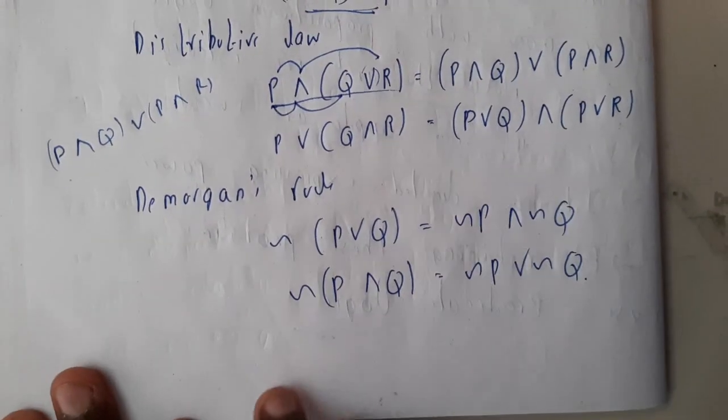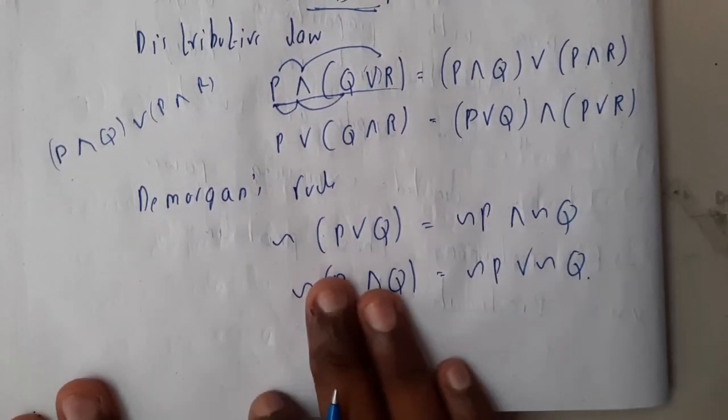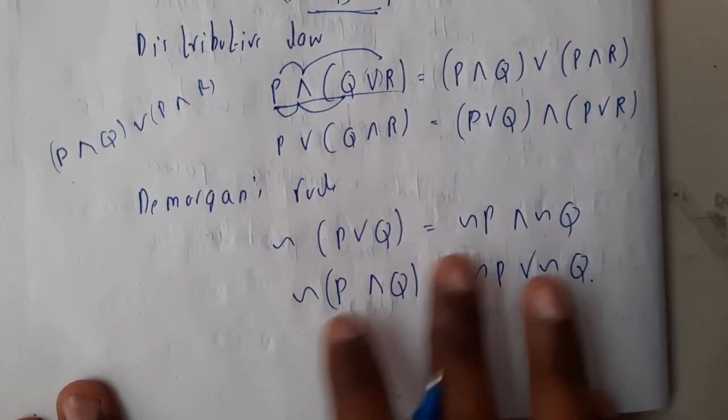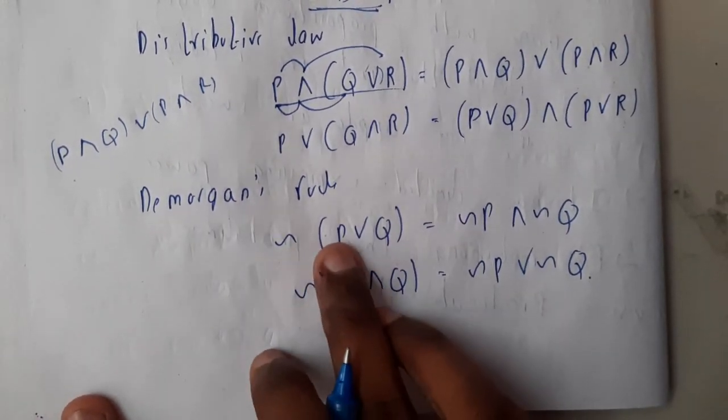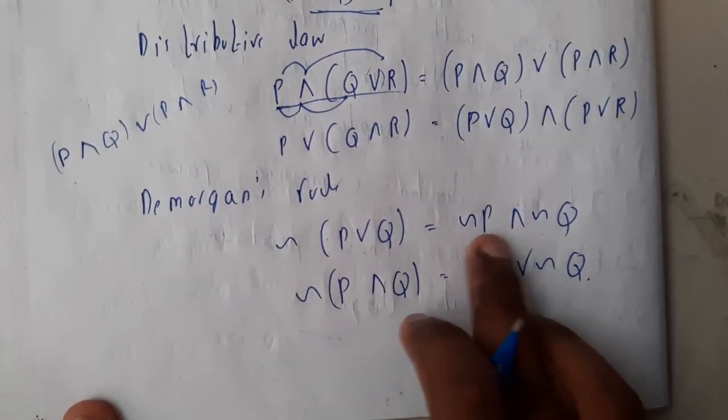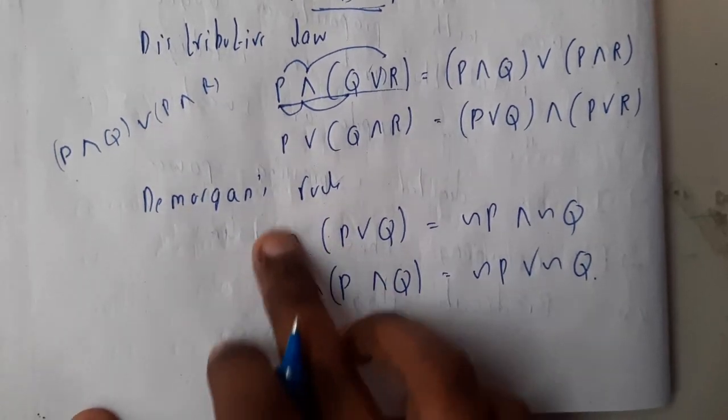After that, De Morgan's law. Remember that. De Morgan's law is nothing but negation of something. If you apply negation of P∨Q, V means or, P or Q, it becomes negation of P and negation of Q.